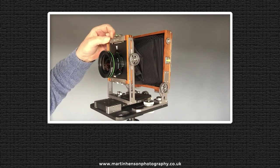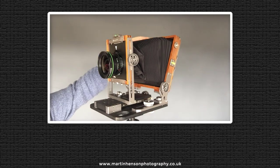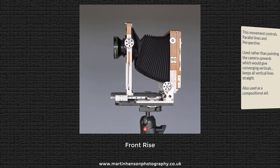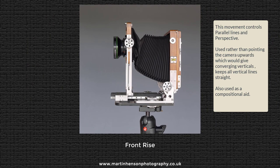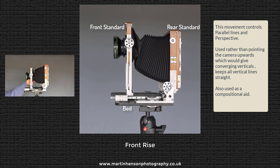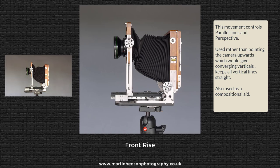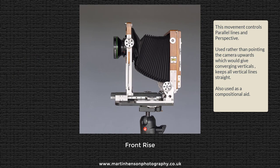The first movement for controlling parallel lines and perspective is front rise. In this picture the bed is level, the front and rear standard is level, but the lens has been pushed upwards on the front standard. If you point the camera upwards to get a building all in frame, the lines converge toward the top. By using front rise, the lines on the building remain parallel while you get more in the frame — that's front rise for controlling perspective.